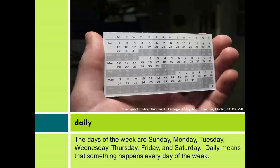Daily. The days of the week are Sunday, Monday, Tuesday, Wednesday, Thursday, Friday, and Saturday. Daily means that something happens every day of the week.